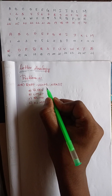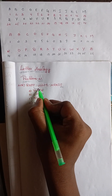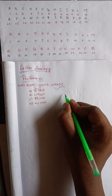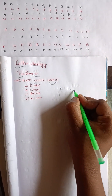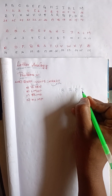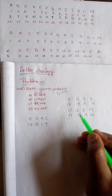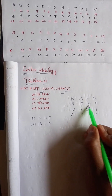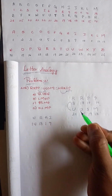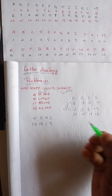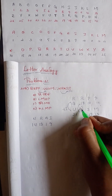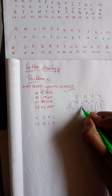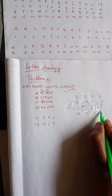Here they have given us a term to find. First we have to find the logic between these two so that we will get the answer. R R P P — the values of R R P P are 18, 18, 16, 16, and U U S M gives the same pattern. That is 18, 18, 16, 16 — the logic is minus 3, plus 3, minus 3, plus 3, minus 3.